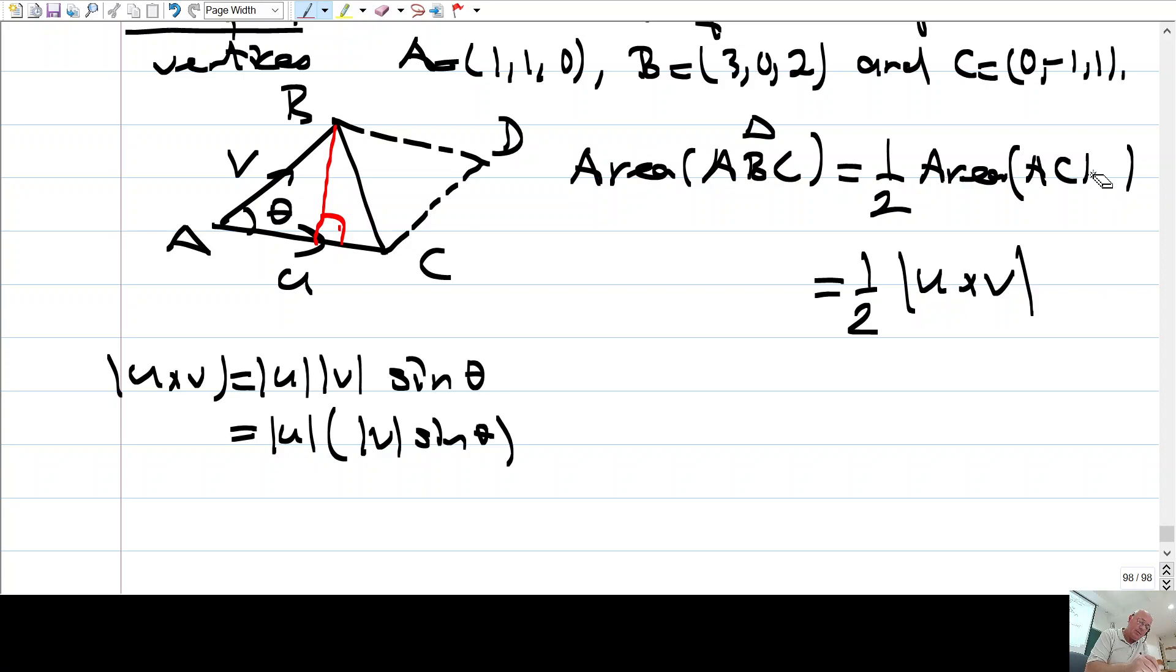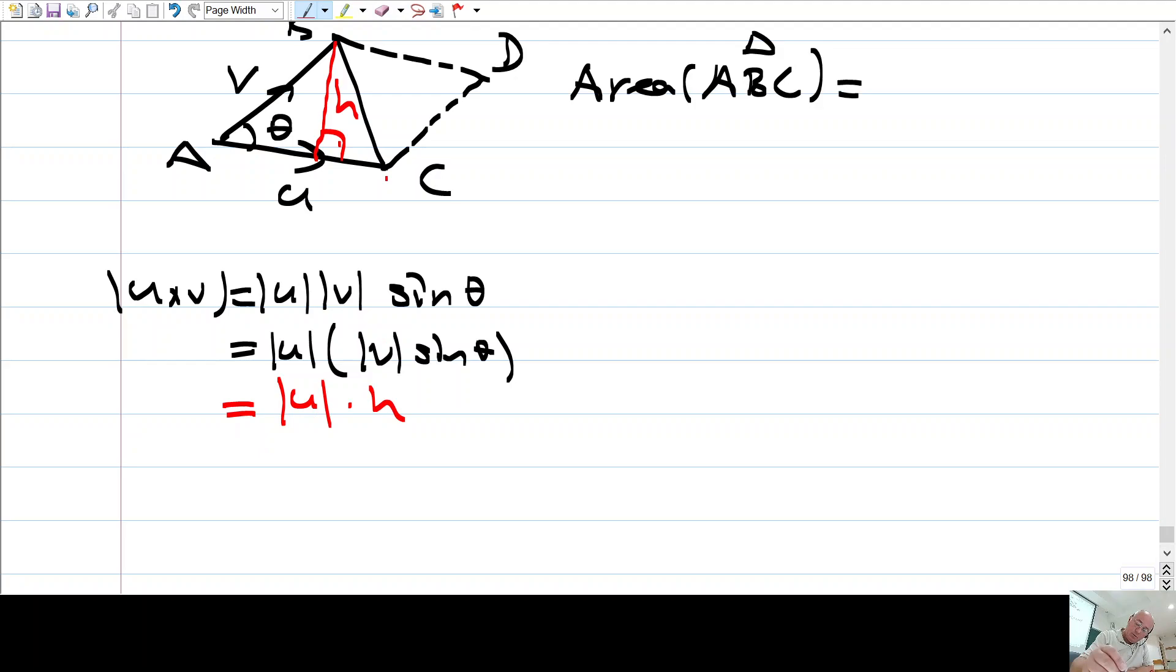Buna gerek kalmadı. Bunu daha sonra yapayım. Şöyle diyeyim. Şurada direkt bu şey U cross V olacak mı bakalım şimdi V çarp V'nin boyu çarpı sinüs theta nedir? V'nin boyu çarpı sinüs theta H eşit değil mi? This is U cross H so this is just base length times height so this is the area of the parallelogram OK so that's correct actually this is area of AC DB so therefore this is one half area of AC DB.